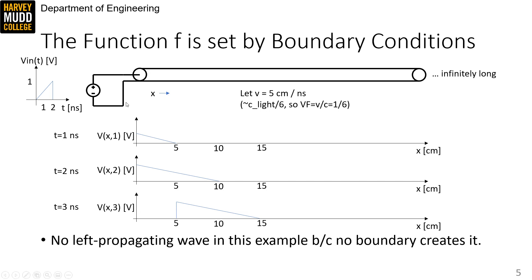This schematic up at the top shows a voltage source driving a signal v in of t into a transmission line. We're letting the speed of the waves in the transmission line be five centimeters per nanosecond, which is one sixth the speed of light. Now because velocities are so fast in transmission lines, we often talk about them as fractions of the speed of light rather than big numbers. We do that using a variable called the velocity factor vf, which is the ratio of the velocity in the line to the speed of light.